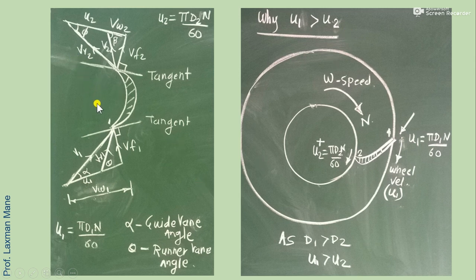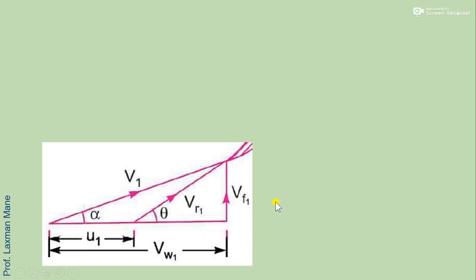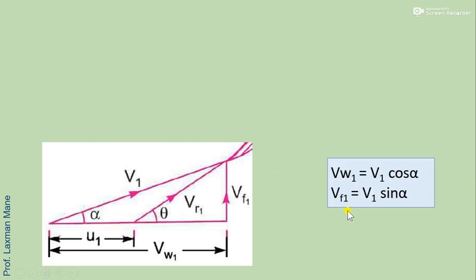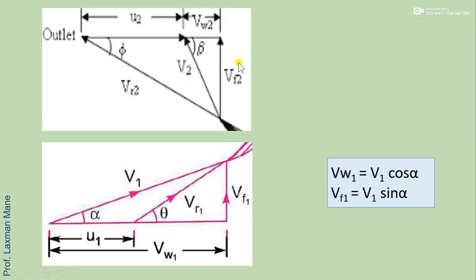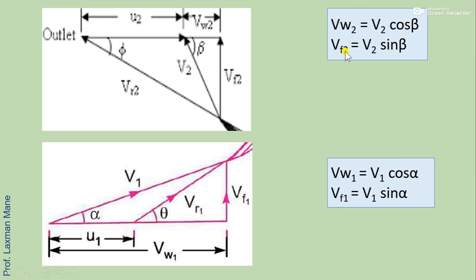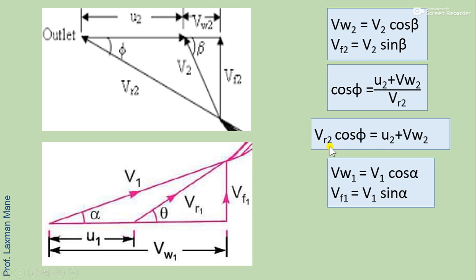The velocity triangle used here is similar to that discussed for the radial curved vane. From the inlet velocity triangle we find whirl velocity and flow velocity at inlet. From the outlet velocity triangle we find whirl velocity and flow velocity at outlet. The relation r2·cos(φ) = u2 + vw2 gives the relative velocity component at outlet, and the relation between relative velocities at inlet and outlet is given by the velocity coefficient k.